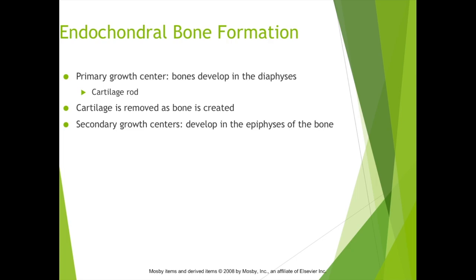In endochondral bone formation, primary growth center bones develop in the diaphyses. There's a cartilage rod that essentially starts off the bone — the cartilage is removed as bone is created — and secondary growth centers develop in the epiphyses of the bone. The initial cartilage rod provides the length template, and as that bone starts to be ossified, we maintain these secondary growth centers in the epiphyses.